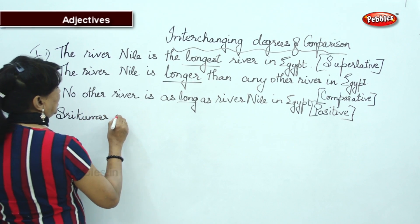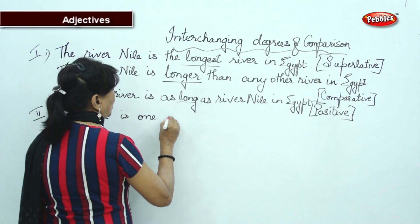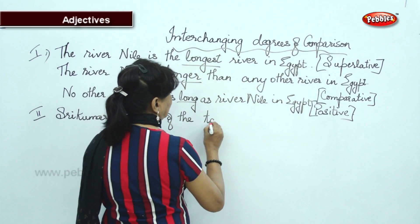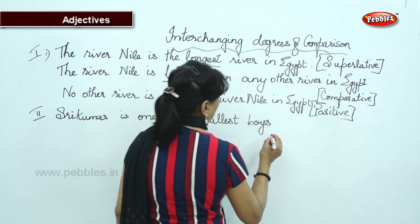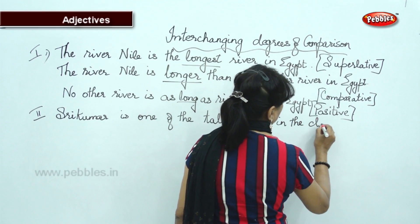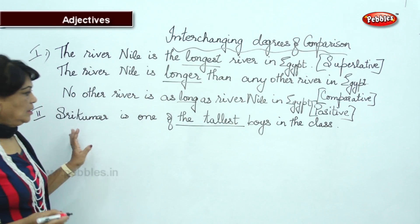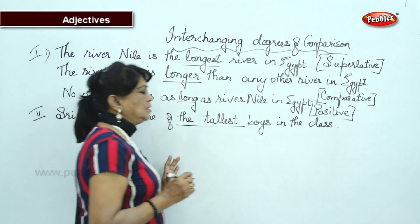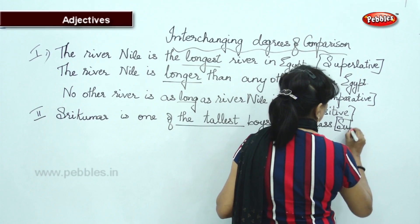Shri Kumar is one of the tallest boys in the class. He is one of the tallest — I am not saying he is the tallest boy, he is one of the tallest. So this is superlative. Let's see how to transform it.